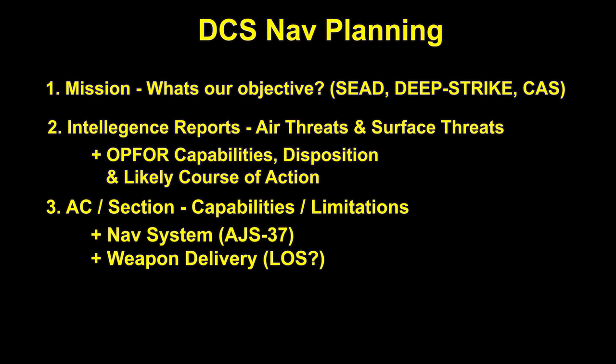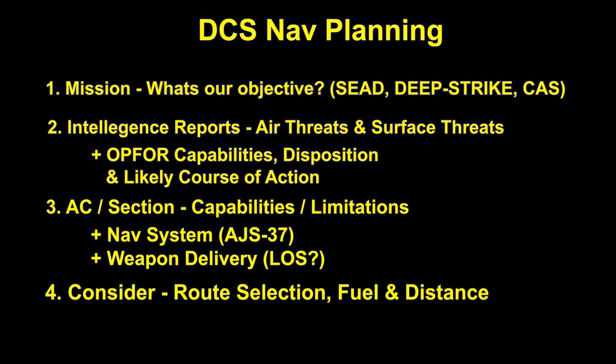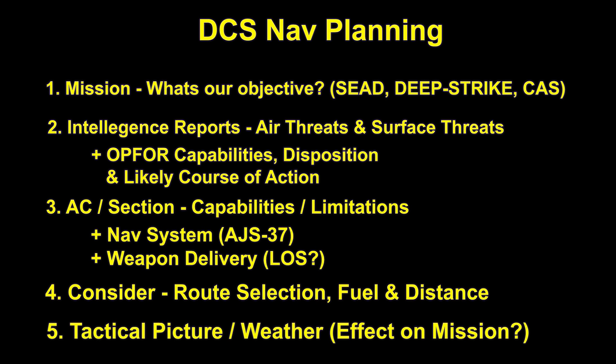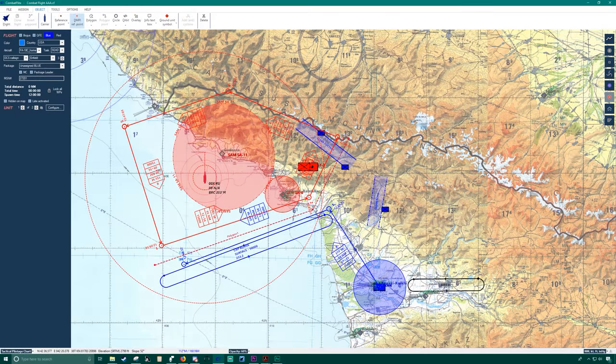Our aircraft or section capabilities and limitations include NAV systems and weapons delivery parameters. Special considerations are given for fuel, distance, and route selection, and of course the general tactical situation as well as weather. Clearly, your NAV plan is going to be based around the capabilities and limitations of the aircraft you are flying. That said, it's unrealistic for me to examine each airframe in detail, so let's look at a very general scenario in Combat Flight.